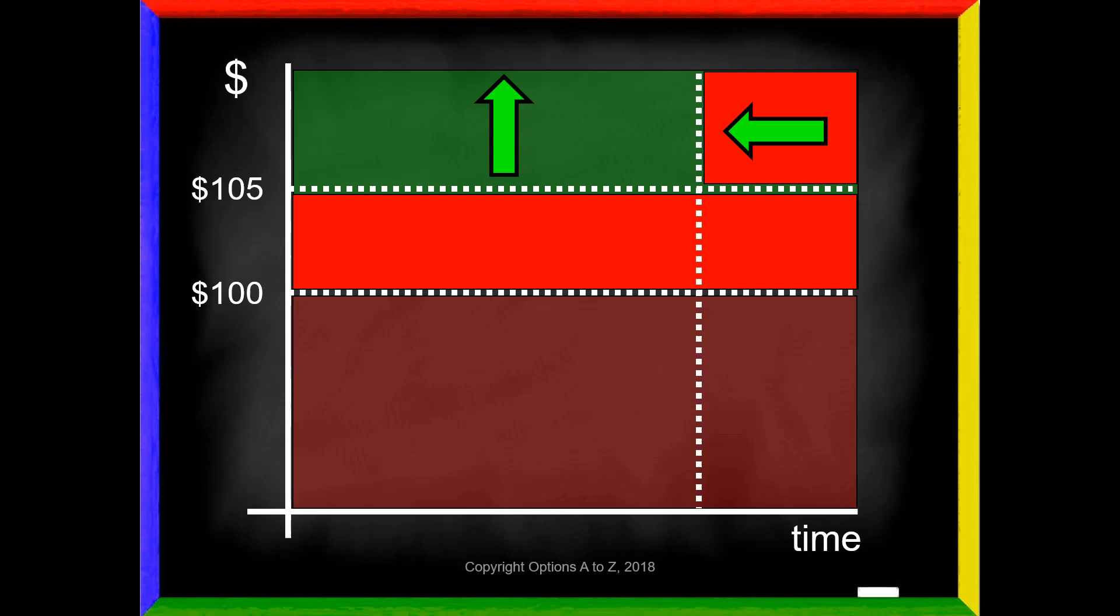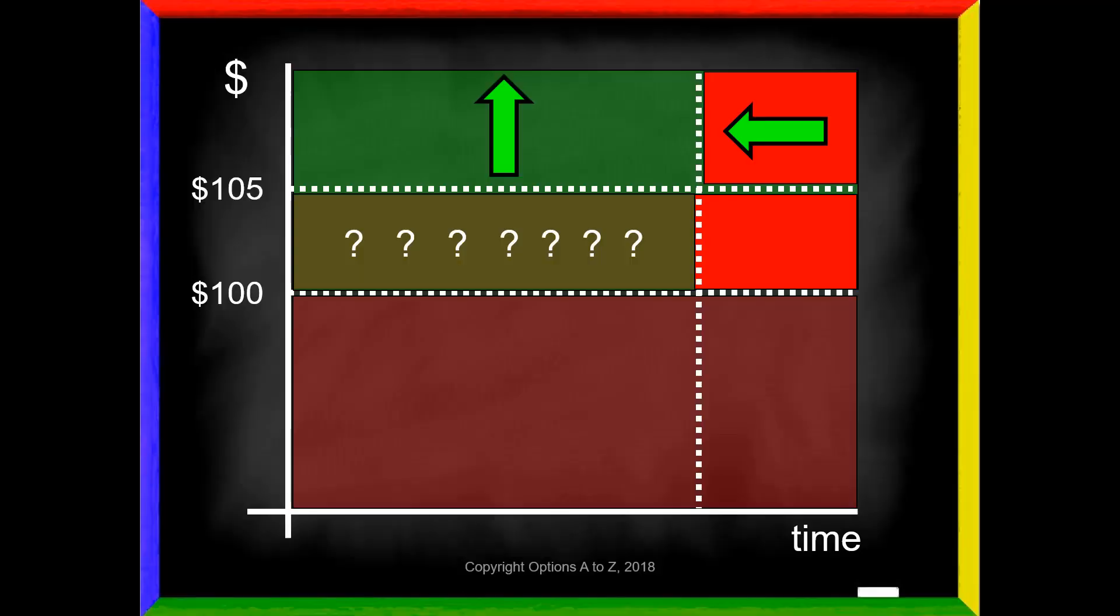However, it gets even more complicated than this. Take a look at this area right here between $100 and $105. Is it possible we could be profitable if the stock lands somewhere in this area? Yes, provided that it is an aggressive move and it happens quickly. So now you're going to see that magnitude and speed are really interrelated. We can become profitable with an option if we get a fast, aggressive move prior to expiration, even though it may not be at our break-even point.